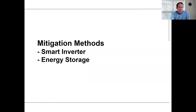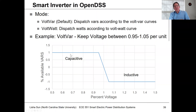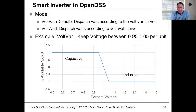In this final segment, we're going to take a look at a couple of mitigation methods for dealing with high voltage: the use of smart inverter technology and energy storage. For the smart inverter in OpenDSS, we have some ability to model the IEEE 1547-2018 functionality.